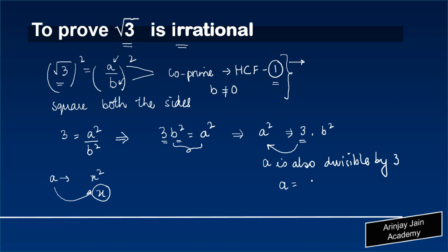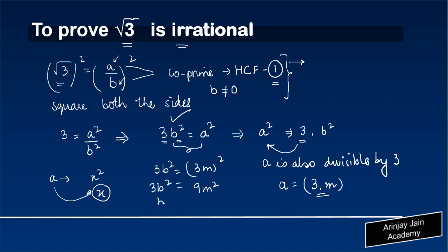So we can write a as 3 times some other number, let's call this m. If I substitute a equals 3m into the equation 3b square equals a square, I get 3b square equals 9m square, or b square equals 3m square. In other words, b square is also divisible by 3, because it can be expressed as a multiple of 3 times some number.